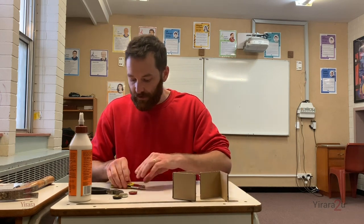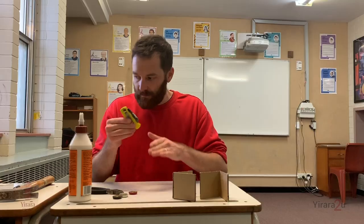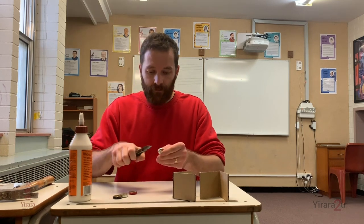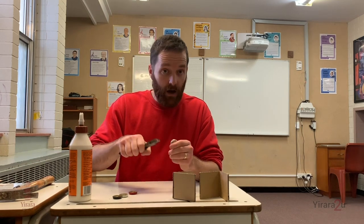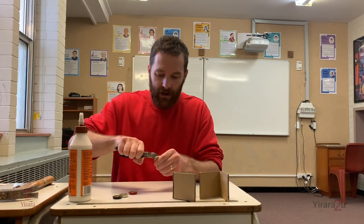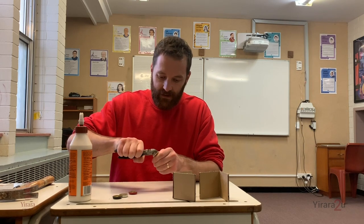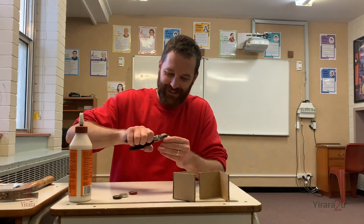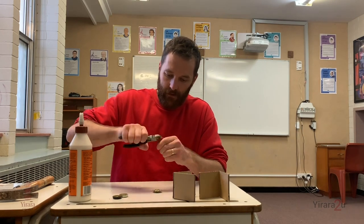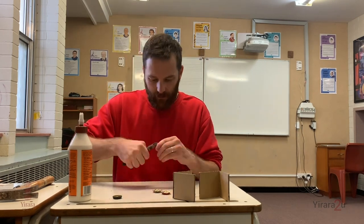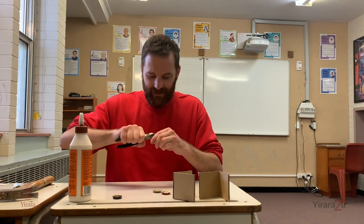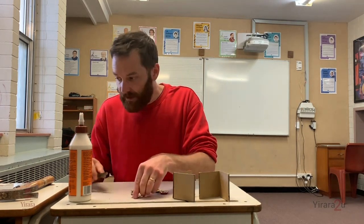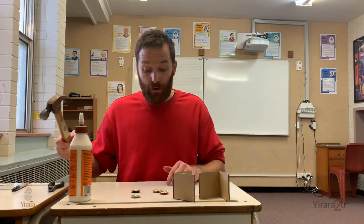Now put your knife away. Get your bottle tops and then get the pliers and bend them out so they're almost flat — bend out the sides like this.